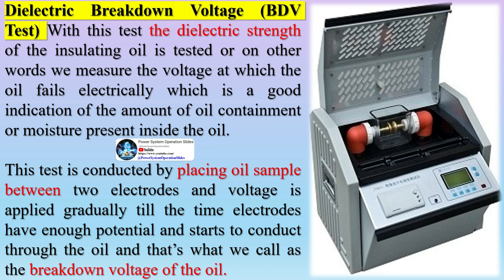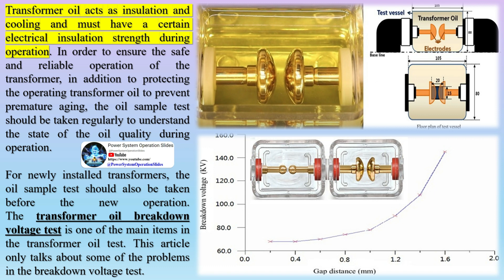Transformer oil acts as insulation and cooling and must have a certain electrical insulation strength during operation. To ensure safe and reliable operation, in addition to protecting the transformer oil to prevent premature aging, the oil sample test should be taken regularly to understand the state of oil quality during operation. For newly installed transformers, the oil sample test should also be taken before the new operation. The transformer oil breakdown voltage test is one of the main items in the transformer oil test.